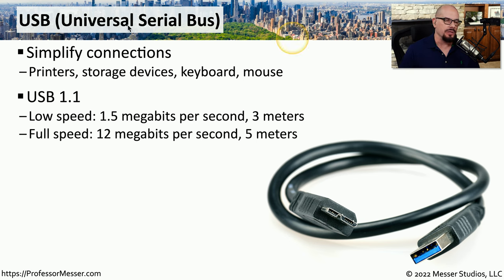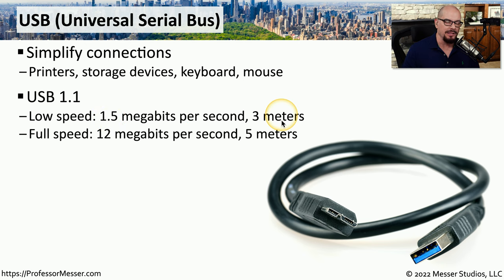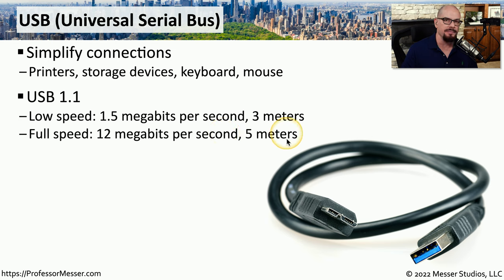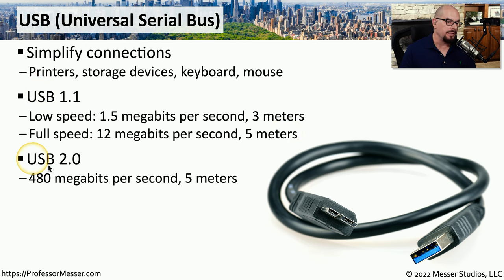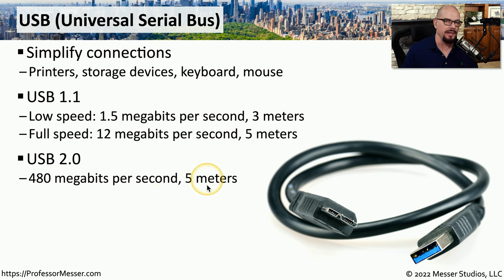One of the early versions of USB was USB 1.1, and it had two different speeds. It had a low speed of 1.5 megabits per second with a maximum cable length of around three meters. There was also a full speed version of USB 1.1, which supported 12 megabits per second over a maximum cable length of five meters. USB 2.0 upgraded from USB 1.1 and increased the total maximum speed to 480 megabits per second over the same maximum five meter cable length.